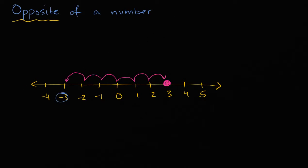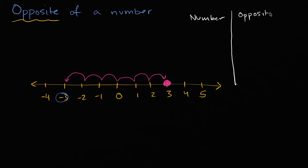Let me make a little table here. So if we have the number, and then we have its opposite — we just figured out that if you have the number three, its opposite is going to be negative three.